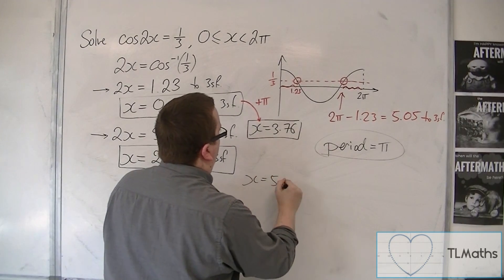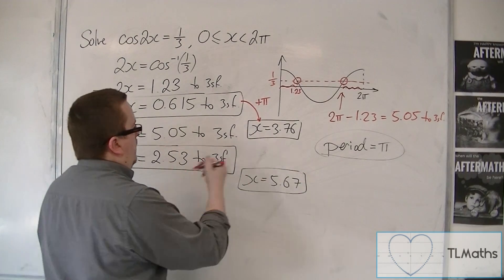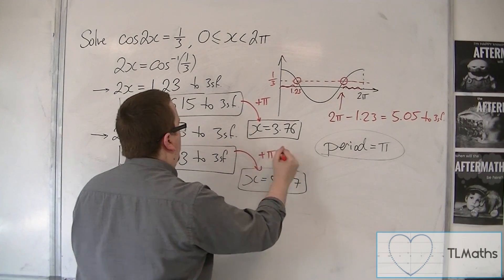So we get 5.67. So x is 5.67 to 3 significant figures. That's by adding pi onto that one.